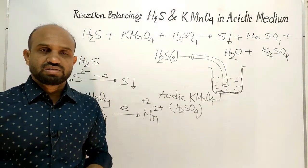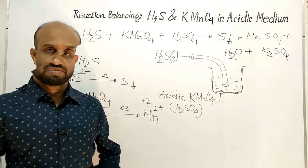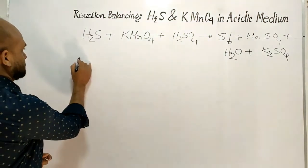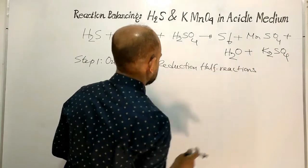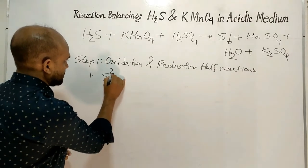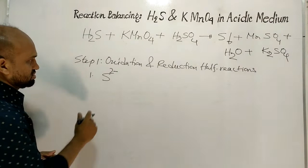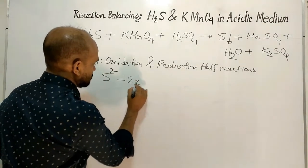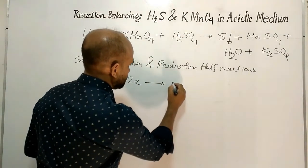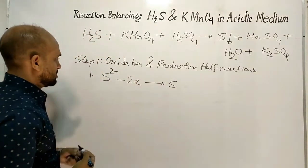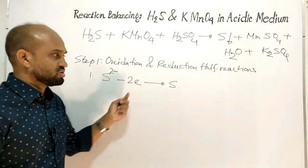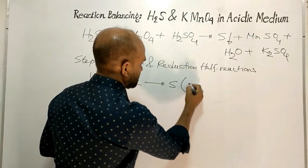Now let's balance the reaction step by step. Step one: write the oxidation and reduction half reactions. Equation one — the sulfide ion from hydrogen sulfide donates two electrons and is converted to sulfur. This is the oxidation half reaction.